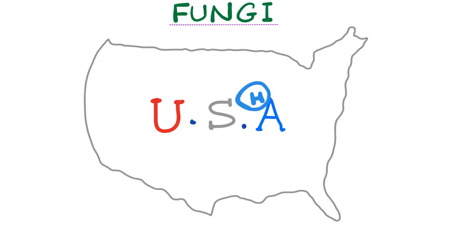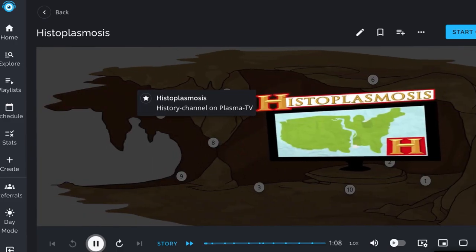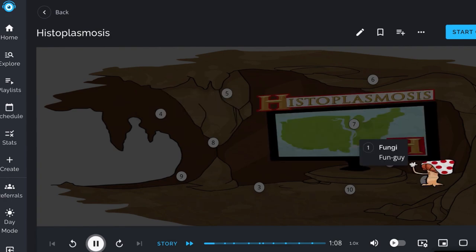Remember the H mnemonic: Histo hides in Ohio, histo hides in macrophages, histo hides in caves which contain bats — or starling birds. To diagnose histoplasmosis, look for the antigen in the urine and/or the serum. Histoplasma is a genus of dimorphic fungi and is the causative agent of histoplasmosis.